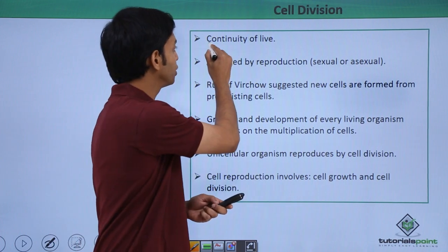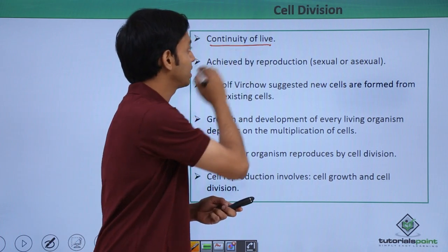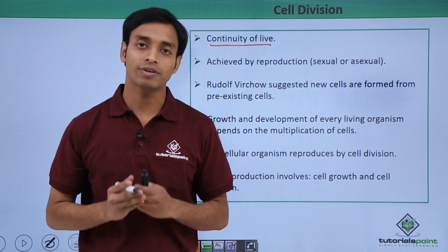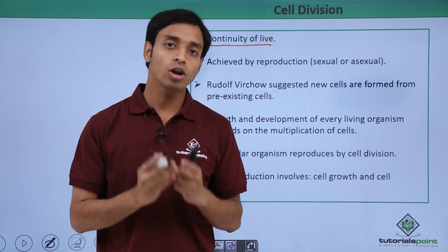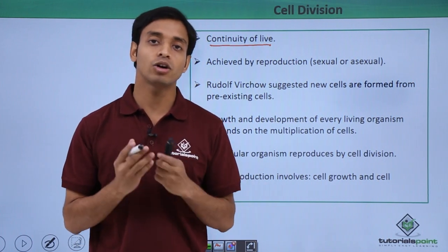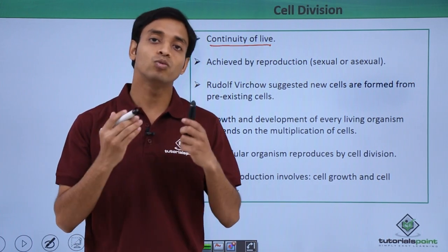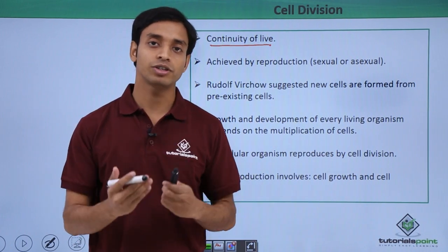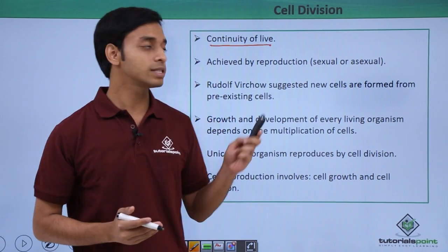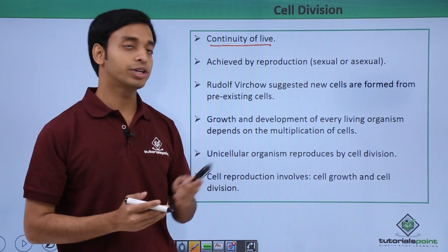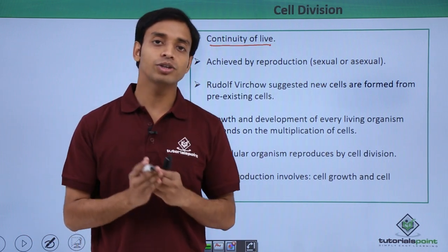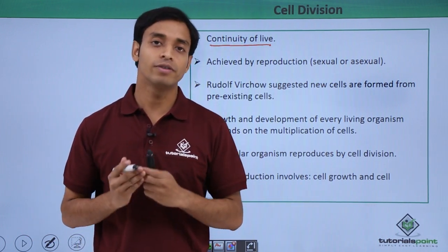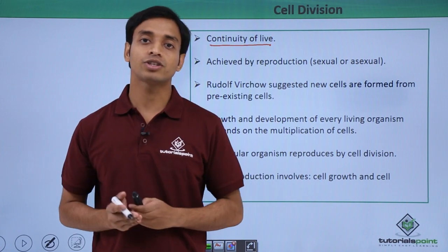That terminology is the continuity of life. What do we mean by continuity of life? This means that all organisms existing on earth want to continue their life for the generations on earth — this is known as the continuity of life. Now, this continuity of life is achieved by the process of reproduction.